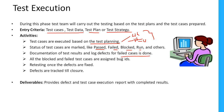We need to mark test cases with different statuses and document test results, and log defects for failed cases. Especially in the execution phase we need to make a record of test results. Whenever we find defects, we need to report them to the developers and make a note of them — that is also one of the activities during test execution. All blocked and failed test cases are assigned bug IDs or defect IDs.